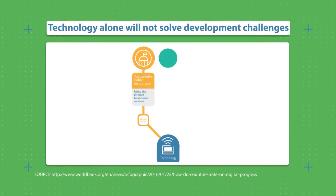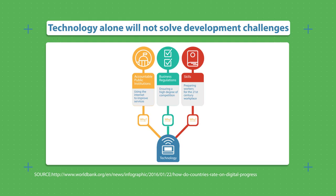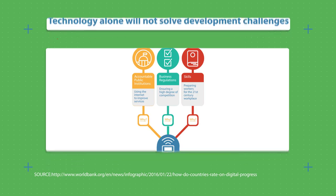The World Development Report 2016 concluded that the full benefits of today's information and communications transformation will not be realized unless countries continue to invest in people's education and health, improve their business climate, and promote good governance. Accountable public institutions, business regulations, and skills are needed to solve the developmental challenges that countries face today.